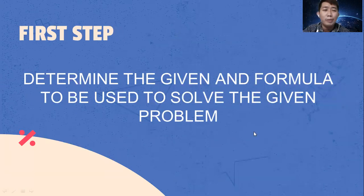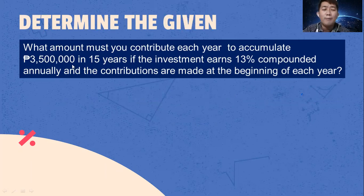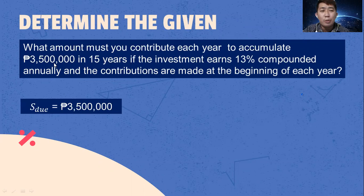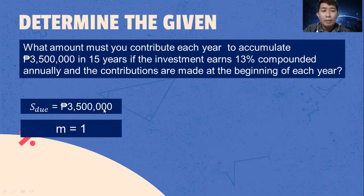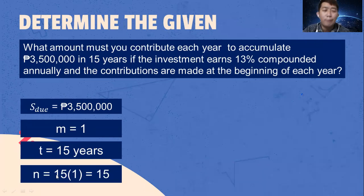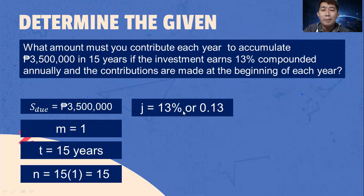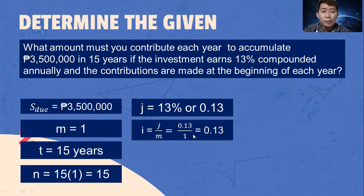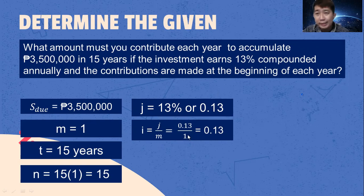Let's now determine the given and the formula to be used. Since it is future value, that is 3,500,000 pesos, the number of compoundings per year is 1 because it's annually. T is equal to 15 years. The total number of annuity payments is T multiplied by M, which is 15 times 1, giving N = 15. J is 13% or 0.13. We solve for i by dividing the nominal interest rate by the number of compoundings per year: 0.13 divided by 1 equals 0.13.